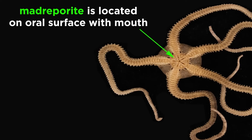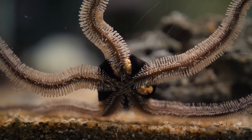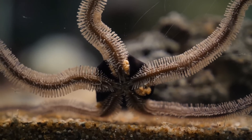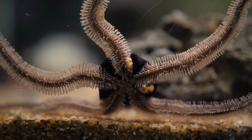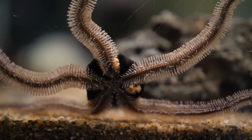Also unlike the starfish, the brittle star madreporite is located on the oral surface by the mouth, which has five movable plates that serve as jaws, so they do not extrude their stomachs to feed. Most species feed on small suspended particles, or dead or decaying organisms, but some species are carnivorous.